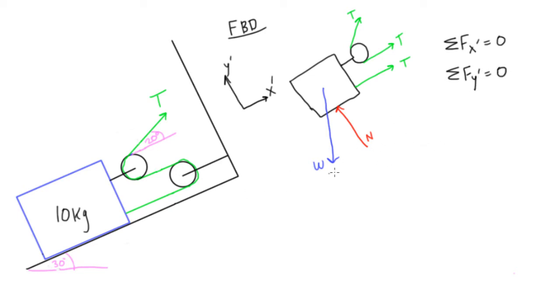And then first of all we'll calculate weight. w is going to be equal to, we'll just write it over here, w is equal to 10 times 9.81, 10 kilograms times 9.81 meters per second squared. So we'll have w is equal to 98.1 newtons.